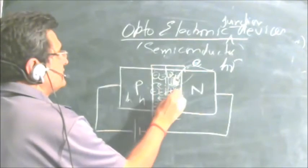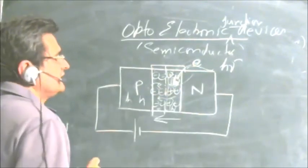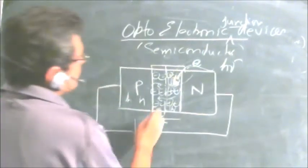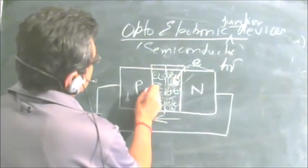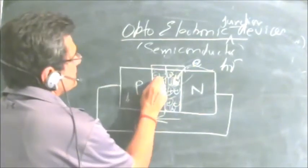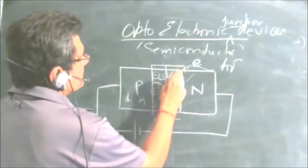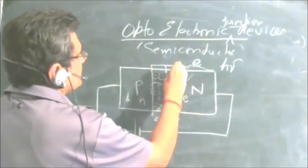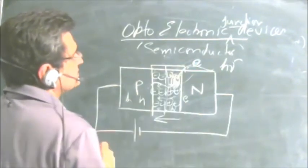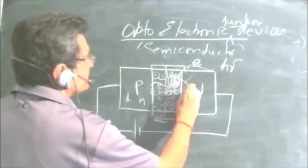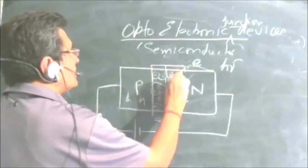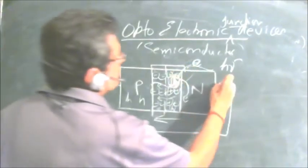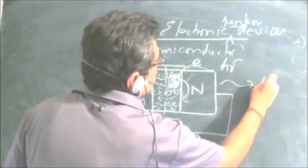During forward bias, minority carriers are injected across the junction boundary and they combine with the majority carriers. The holes which crossed to the N-side are now minority there, but electrons are majority, and these excess holes combine with the majority electrons. Minority carriers, now in excess, combine with the available majority carriers, and a photon — this energy — is generated. This process is called injection of minority carriers.